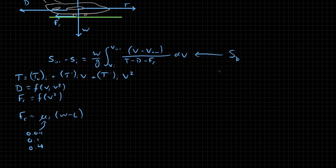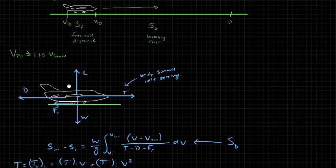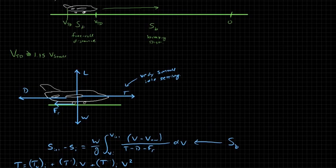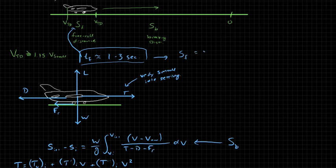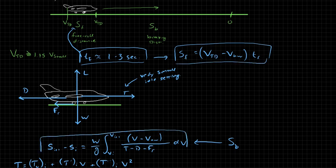Now once we have an approximation for S b, we already have an approach. Sorry, I didn't mention this, but our free roll distance is just a reaction time thing. So S f is generally on the order of one to three seconds. We don't do anything special. Oh, excuse me, that's T f. The reaction time T f is usually on the order of one to three seconds. And so S f is just V TD minus V headwind times T f. So now we have our approximation for S f. We have our approximation for S b, nothing new here.